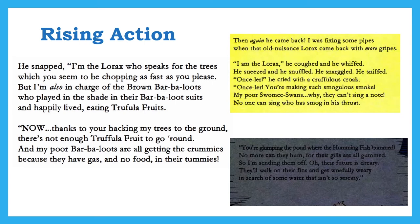And then later: 'I am the Lorax — Onceler, you're making such smogulous smoke. My poor Swomee Swans, why they can't sing a note — no one can sing who has smog in his throat. And you're glumping the pond where the Humming Fish hummed. No more can they hum for their gills are all gummed. So I'm sending them off — their future is dreary. They'll walk on their fins and get woefully weary in search of some water that isn't so smeary.' This draws a direct parallel to deforestation's effects in our own world — animals losing homes, poor air and water quality.